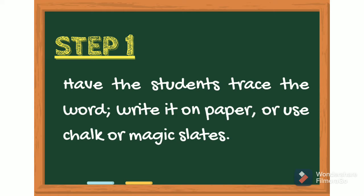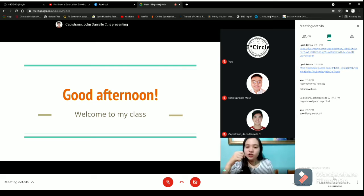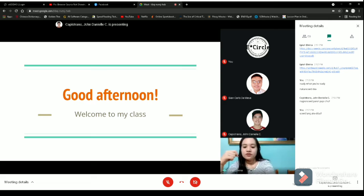Step 1. Have the students trace the word, write it on paper, or use chalk or magic slates. Good afternoon everyone, welcome to my class. Last session, we read a story and I gave you an activity to write down all the unfamiliar words you encountered or words that you're not sure about their meaning. I've only chosen 4 of them.